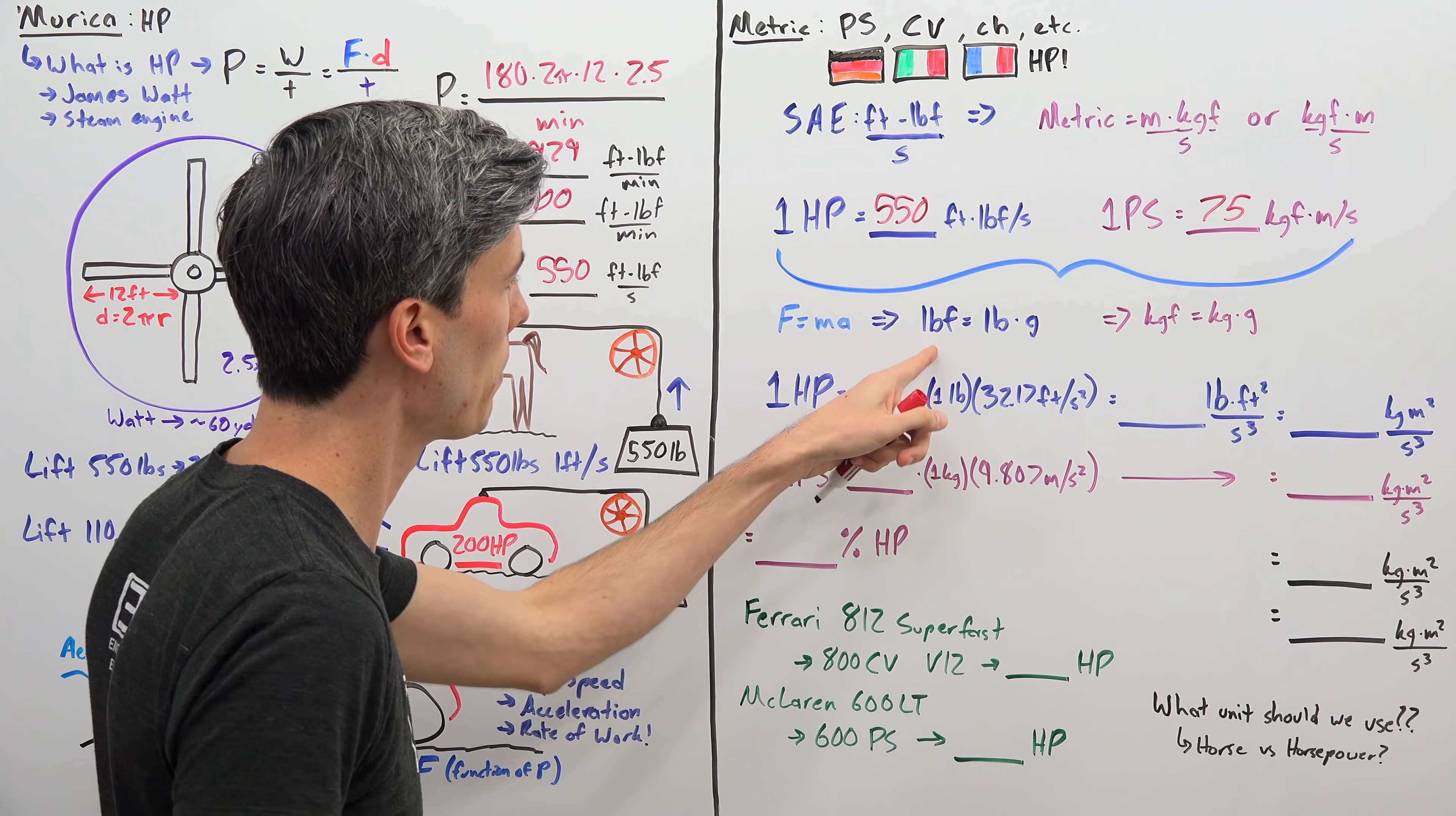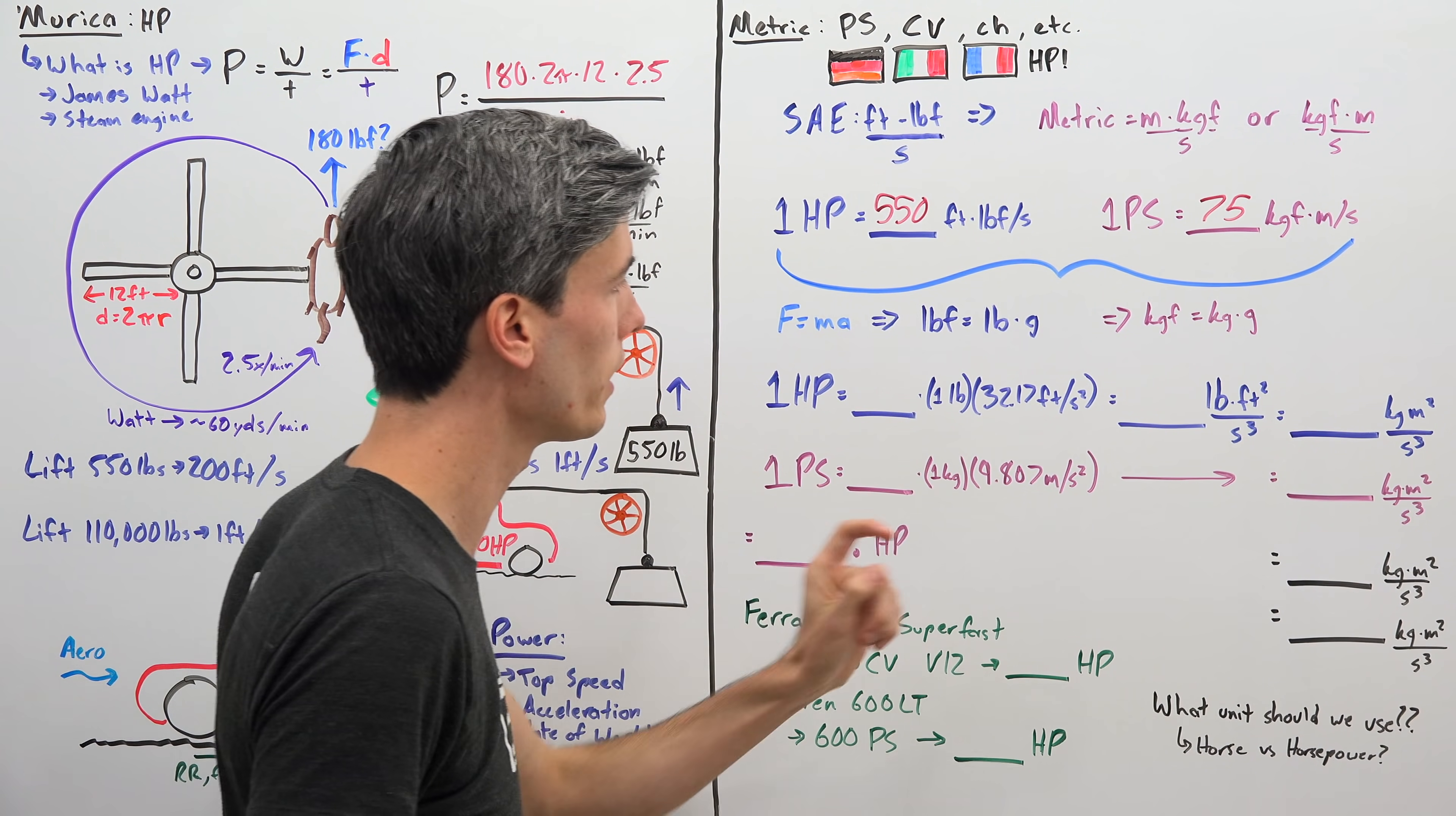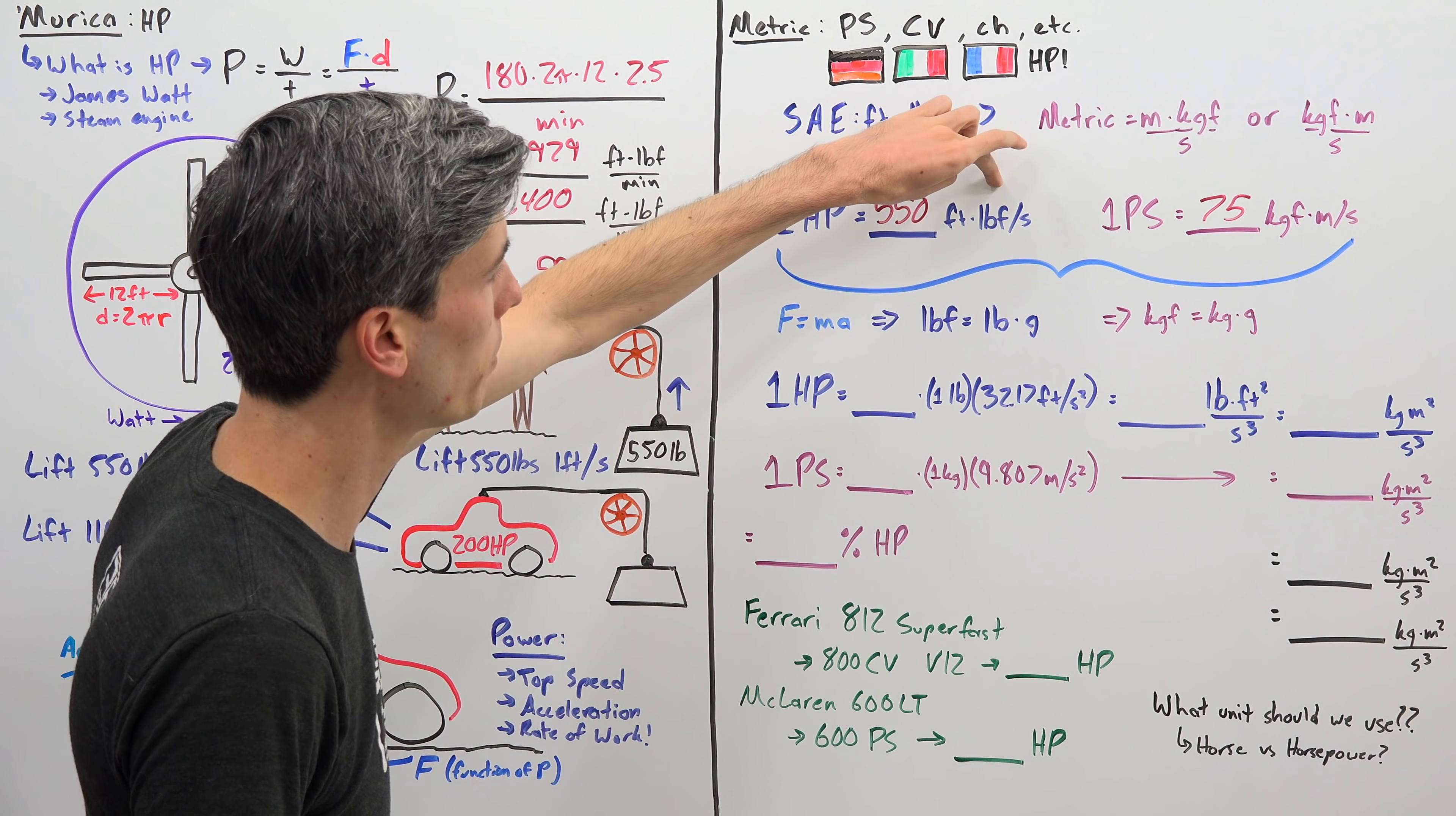One of the interesting things we need to look at here though is that we have a unit of force. And so a pound force, force is equal to mass times acceleration. So a pound force is equal to a pound of mass multiplied by gravity. A kilogram force is equal to a kilogram multiplied by gravity.